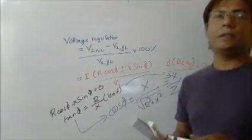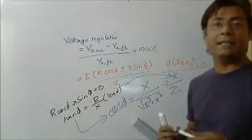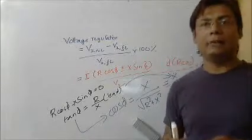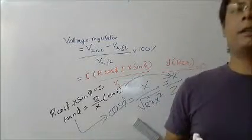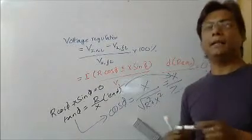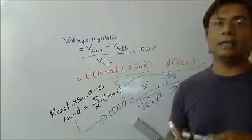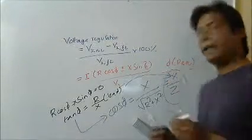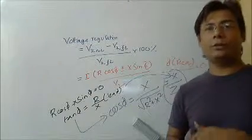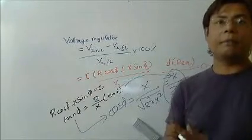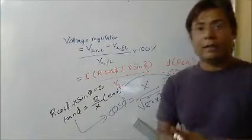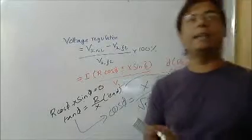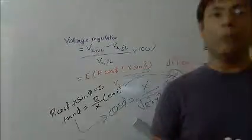This equation, X by Z, shows that for leading power factor, the voltage regulation is negative. It means that secondary full load voltage is greater than the no load voltage. This equation shows for leading power factors, the voltage regulation is negative.